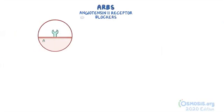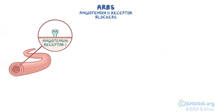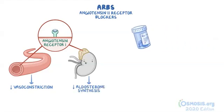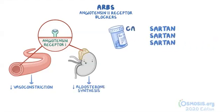Finally, we have angiotensin II receptor blockers, or ARBs. They bind to angiotensin receptor 1 on vascular smooth muscles and the adrenal glands, which prevents angiotensin II from binding. This results in decreased vasoconstriction and decreased aldosterone synthesis, respectively. ARBs end in -sartan, like candesartan, valsartan, and losartan.